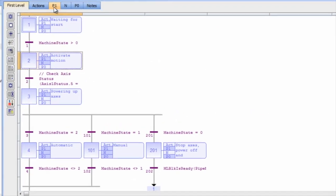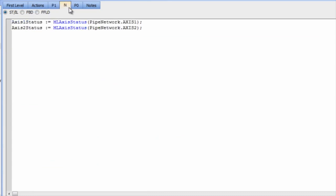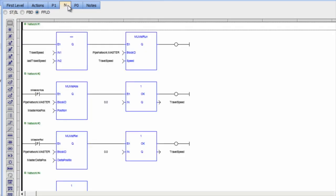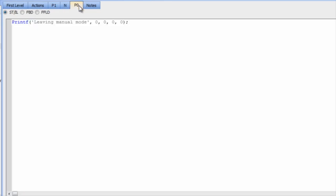The sequential function chart acts more like a file manager than an actual language and can work with a combination of languages, such as structured text and free-form ladder diagram.